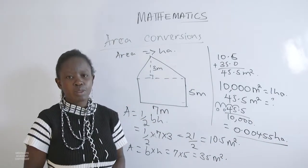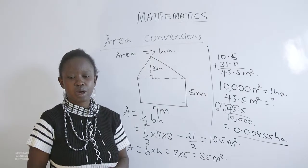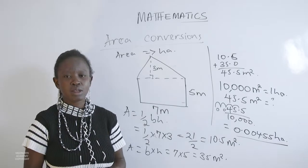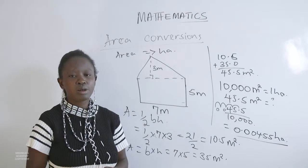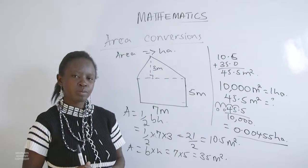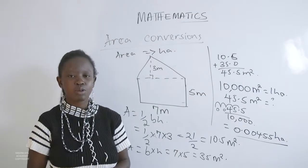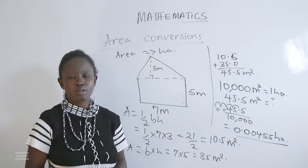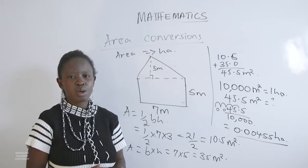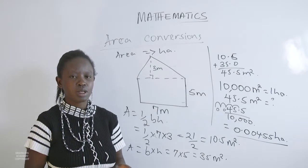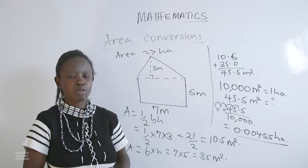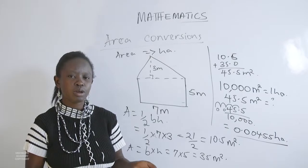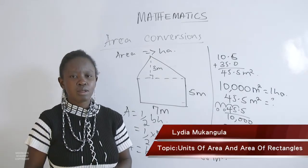With that, I hope we can work out areas of the various figures we have looked at: area of a rectangle, a triangle, a composite figure, a parallelogram, and so on. For any figure you've been given, we are now in a position to work out the various areas and convert from one unit to another. Thank you.